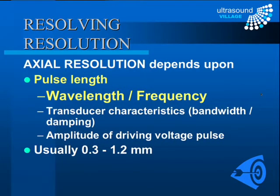We need to talk about resolution — how accurately our machine can locate precise objects and surfaces, particularly small structures. Axial resolution is resolution along the line of the beam, and its primary determinant is the pulse length, which is determined mainly by the wavelength or frequency — they are inversely related. Other characteristics like transducer bandwidth, damping, and driving voltage also matter, but in general with typical machines our axial resolution is between 0.3 and 1.2 millimetres.